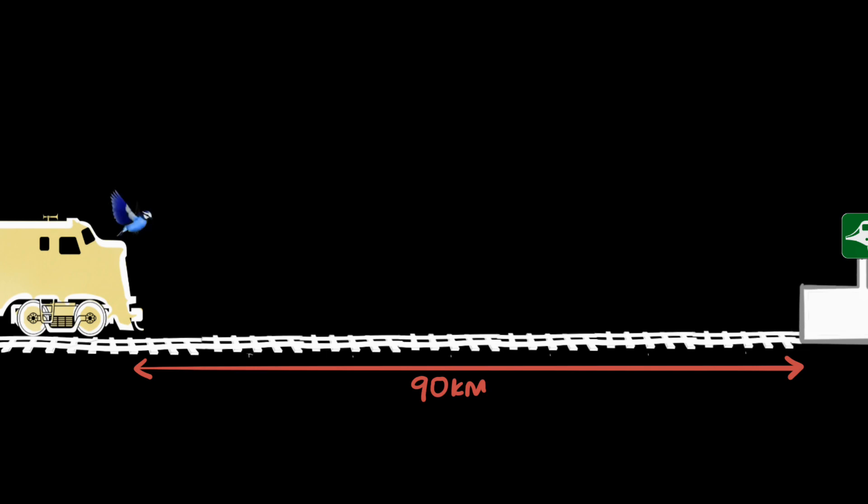There's a bird sitting on top of this train. Both the train and the bird will start moving towards the station. The train will start moving at 10 kilometers per hour, and the bird will start moving a little faster, say 30 kilometers per hour.